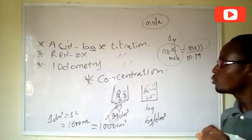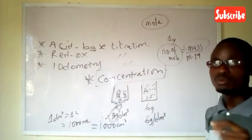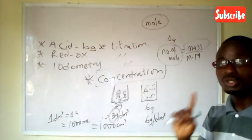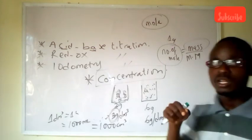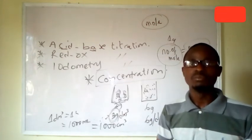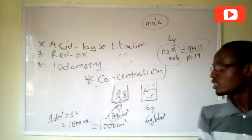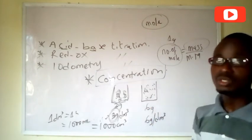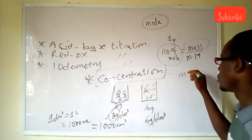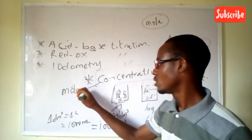Mass concentration, and concentration simply means the number of moles or the amount of the solute present in one dm³ of the solution. The solution is a mixture of solvent and the solute. The amount in moles or in mass of the solute present in one dm³ of the solvent is what we call concentration. Concentration is divided into two: mass concentration and molar concentration.